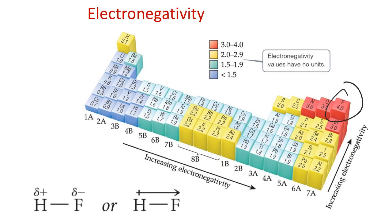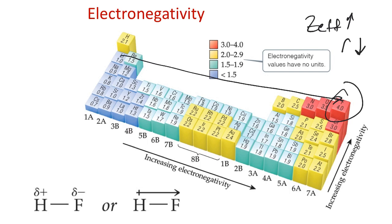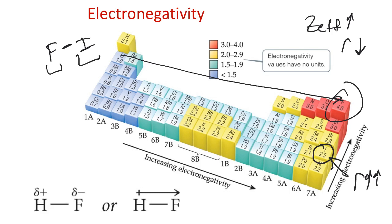Fluorine has the highest electronegativity of all elements on the periodic table. Electronegativity is a measure of the relative desire for electrons within bonds. Fluorine can pull electrons more closely toward itself because it has a relatively high effective charge and a really small size. Iodine technically has a higher effective charge than fluorine, but being much bigger prevents it from having as strong a pull toward itself for electrons in bonds.